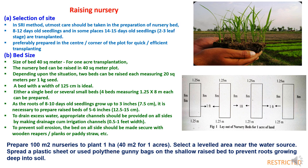During SRI method of rice cultivation, the first step is raising nursery. During nursery raising, the first step is site selection. Utmost care should be taken in the preparation of nursery bed because 8 to 12 days old seedlings are used, and in some places 14 to 15 days old seedlings are used when at the 2 to 3 leaf stage. The nursery bed should preferably be prepared in the center or corner of the field for quick and efficient transplanting. The nursery bed size for one acre transplantation can be raised in a 40 square meter plot.